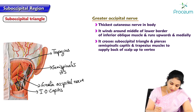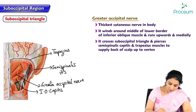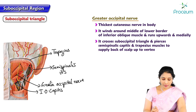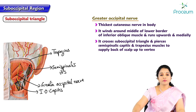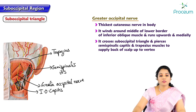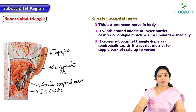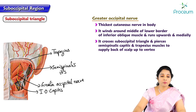The greater occipital nerve pierces the muscles forming the roof — that is semispinalis capitis and trapezius — to supply the back of the scalp up till the vertex. It is mainly meant to supply the posterior part of the scalp.